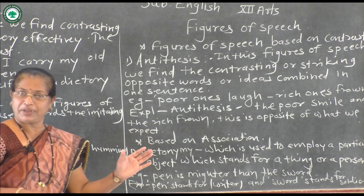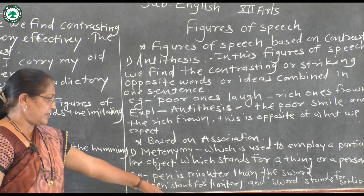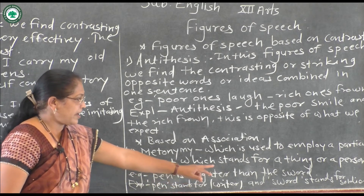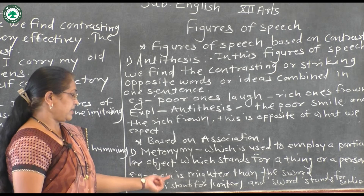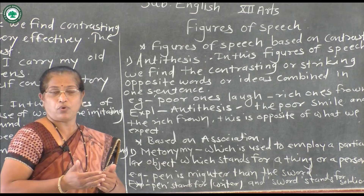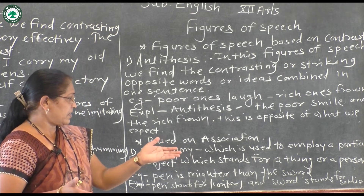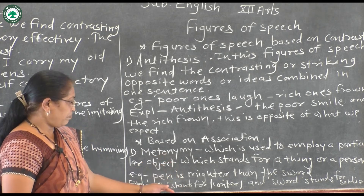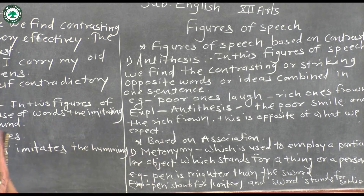First write the name of the figure of speech — metonymy. Then explain: pen stands for writer and sword stands for soldier. In the example 'the pen is mightier than the sword,' the poet wants to explain the importance of the pen. Comparatively, the pen is mightier than the sword — meaning the sword is not as important as the pen. So pen stands for writer and sword stands for soldier — that is metonymy.